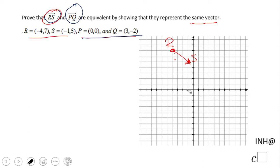We have P at (0, 0) and Q at (3, -2), which will be right here. If you notice, these two vectors have the same length and the same direction.